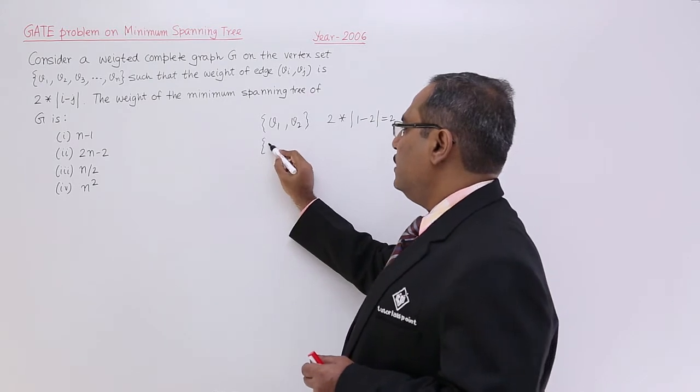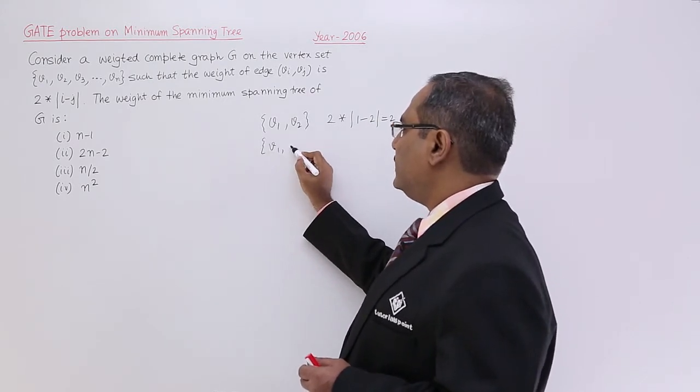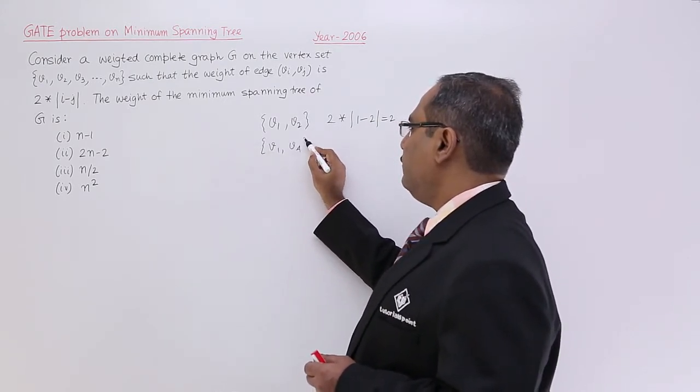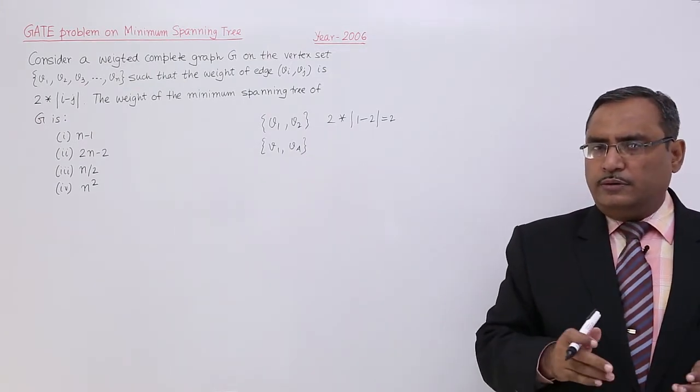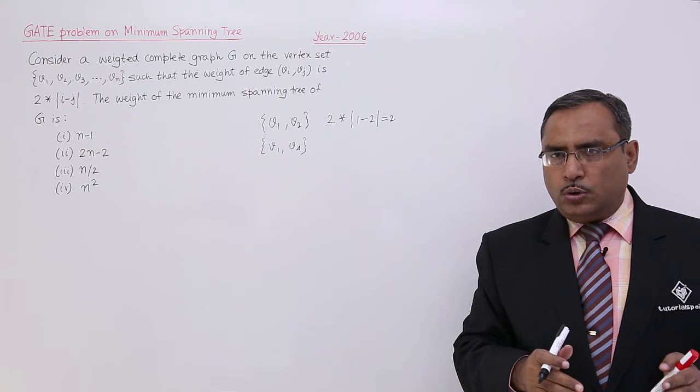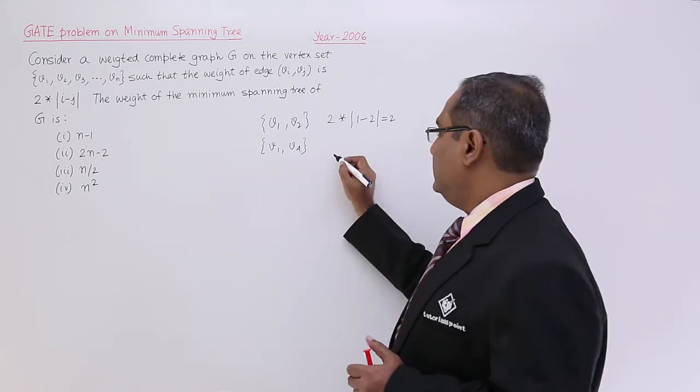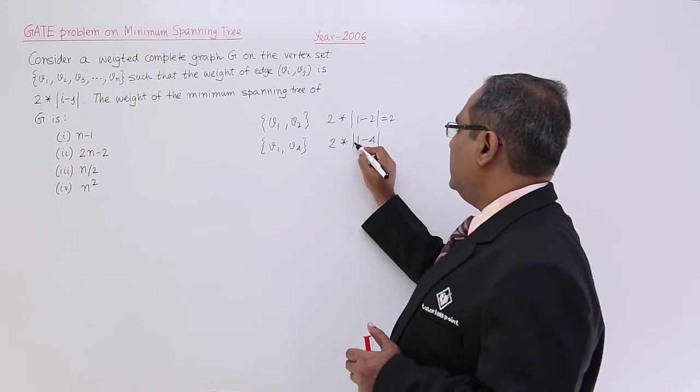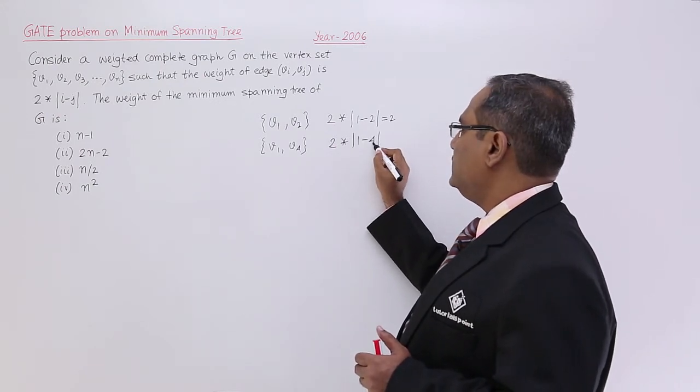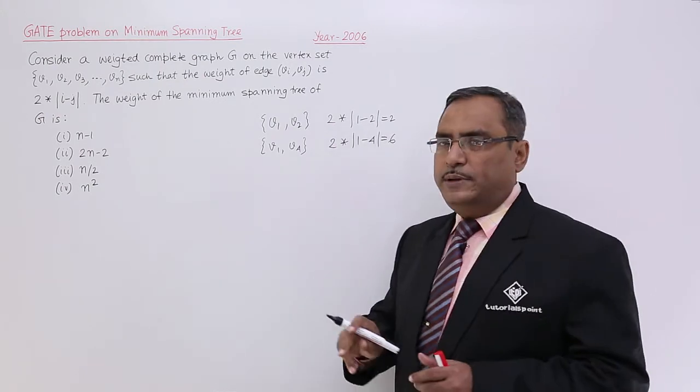But if you consider any other vertex, say V1-V4 - if you consider this particular edge, as it is a complete graph, in between any pair of nodes there will be one edge - in that case it will become |1-4|, and that is absolute of that. So it is getting 3, so 6 will be the answer.